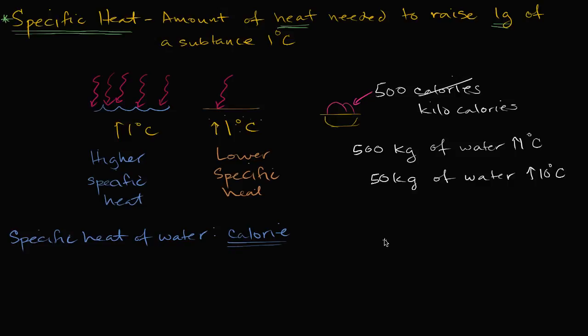That's actually happening in our body. Your body heat is actually caused, partially, by the energy from food — some of it processes movement, muscle functions, brain activity, and some of it is just producing heat. So 500 calories on a food label is really 500 kilocalories — enough energy to raise 500,000 grams of water one degree Celsius, or 50,000 grams of water 10 degrees Celsius.